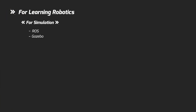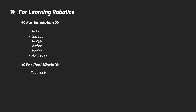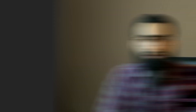For simulation, the most popular software we have is ROS Gazebo, VREP, VBOT, MATLAB, and NVIDIA ISAAC. MATLAB and Gazebo can be combined. For the real world, we need to understand electronics, we need to have a physical body, and we need to do programming.